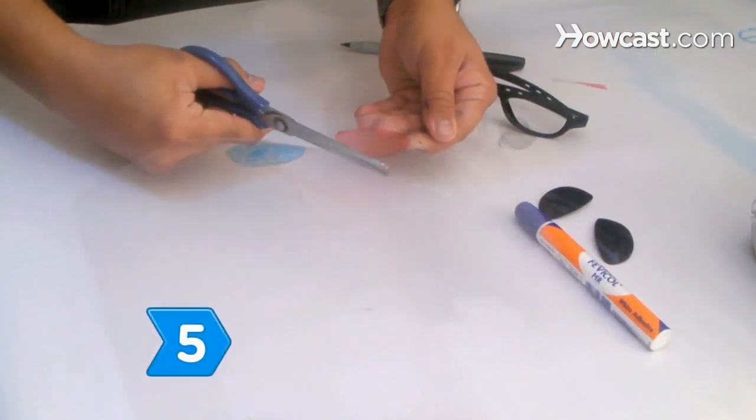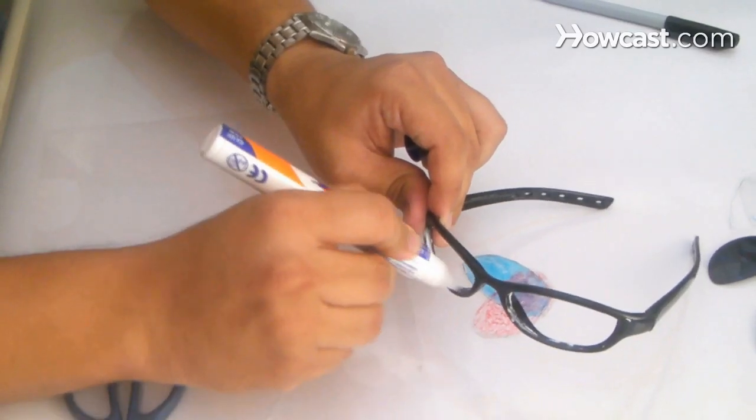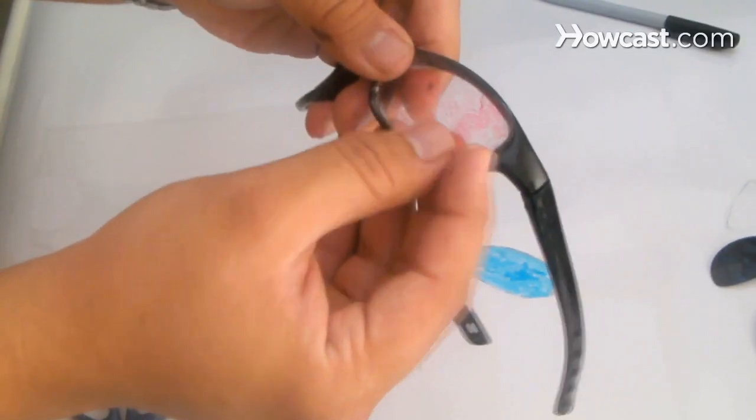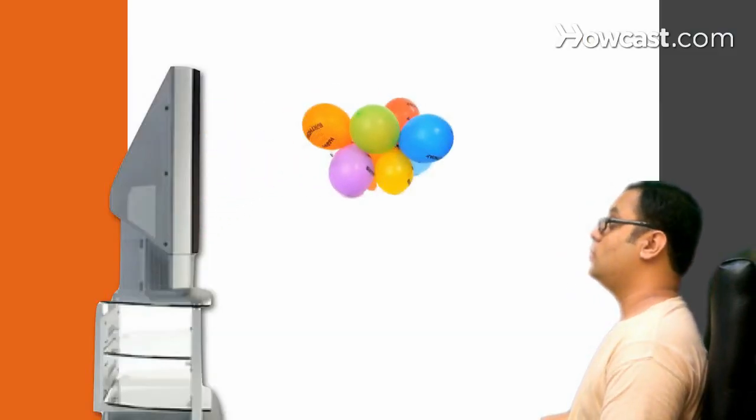Step 5. Cut the new lenses out. Dab some superglue on the inner rims of the frames, and pop the red lens into the left eye, and the blue one into the right. Now kick back and enjoy that third dimension in style.